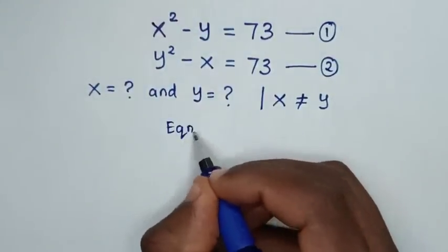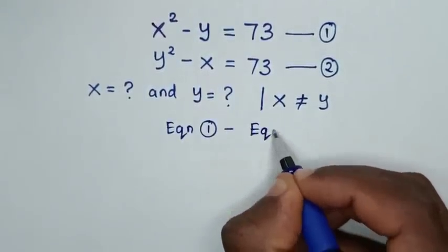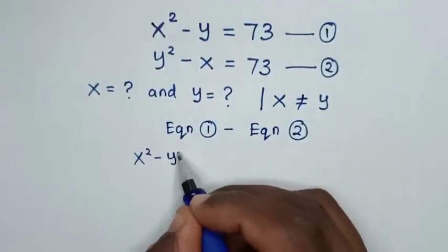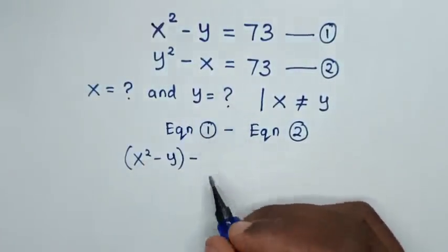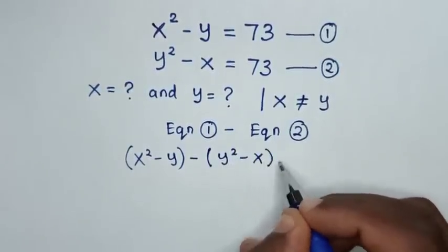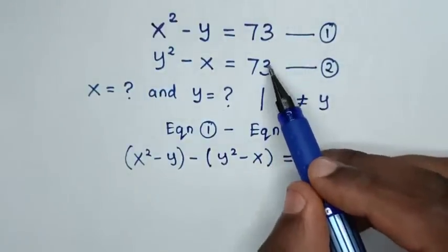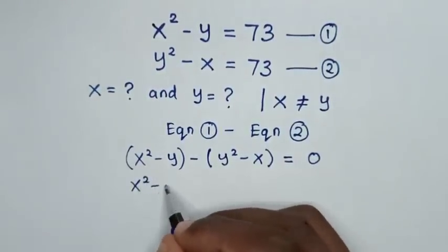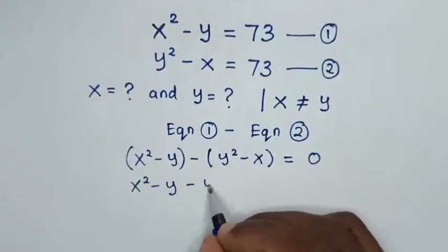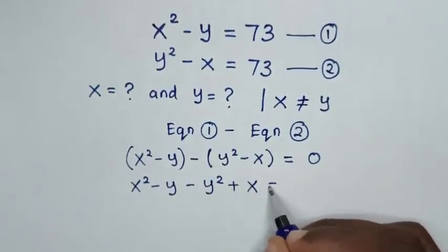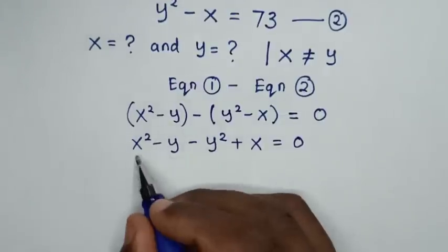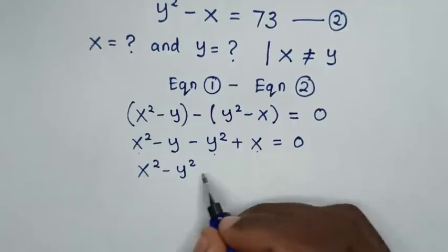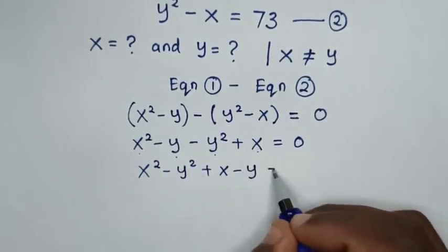From equation 1 minus equation 2: the left side gives x squared minus y, minus bracket y squared minus x bracket, is equal to 73 minus 73 which is 0. Opening the brackets, it will be x squared minus y, then minus y squared, and this becomes positive x, equal to 0. Rearranging: x squared minus y squared, plus x minus y, is equal to 0.